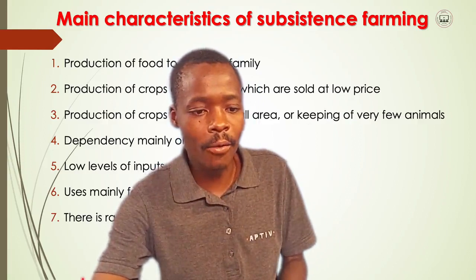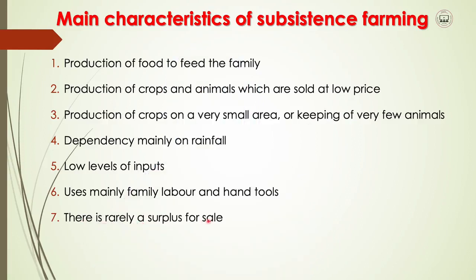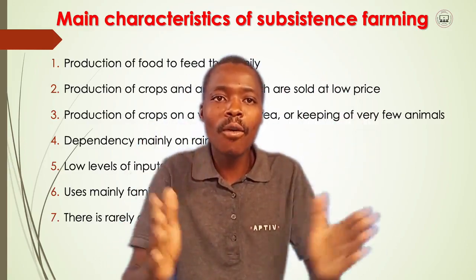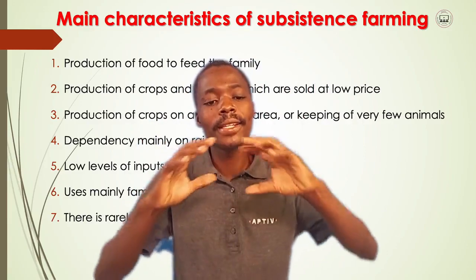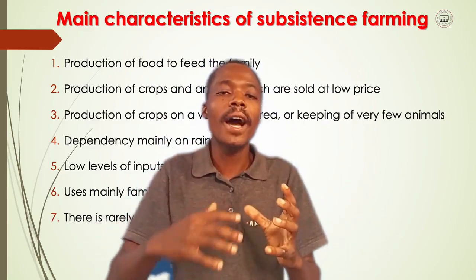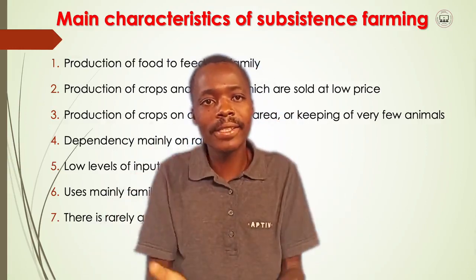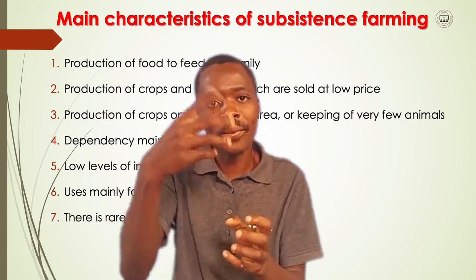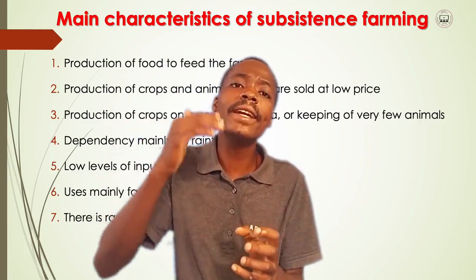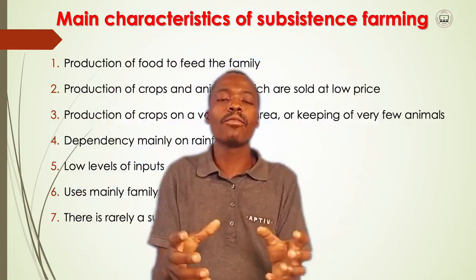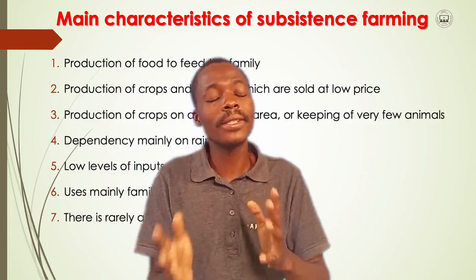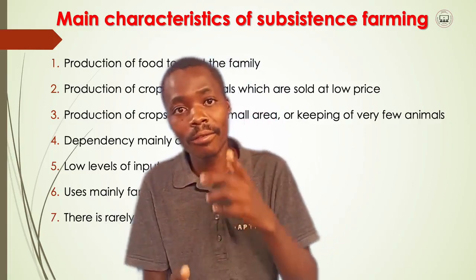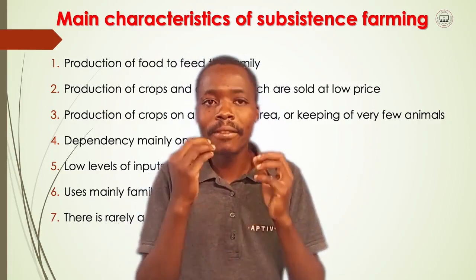The last characteristic is that there is little or rare surplus for sale. The farmer produces on a very small area. Surplus means the extra yield — what remains after the farmer and family have eaten. In subsistence farming, surplus is very rare because the farmer is producing on a very small area. There is a chance that surplus may or may not occur, but it is not commonly happening. So whenever the farmer is producing, surplus is rarely found.